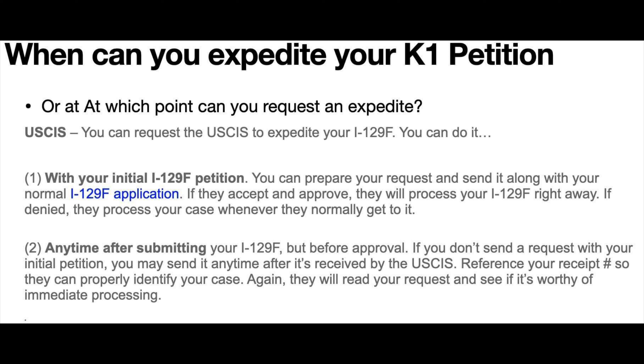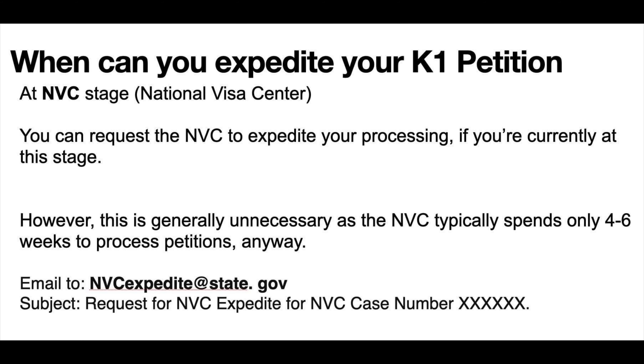The second stage is the NVC stage. At the National Visa Center, you can request the NVC to expedite your processing if you are currently at this stage. However, this is generally unnecessary as the NVC typically spends only four to six weeks to process petitions anyway. You can email nvcexpedite@state.gov with the subject 'Request for NVC Expedite' followed by your NVC case number.